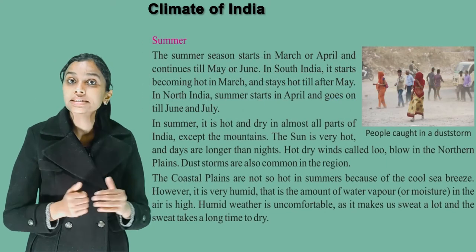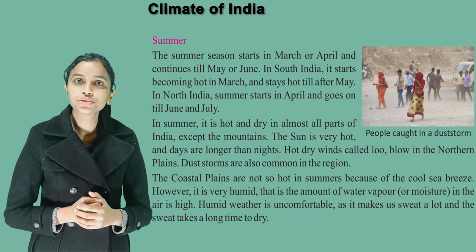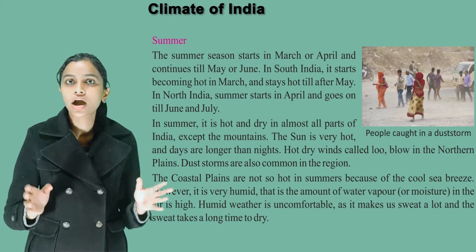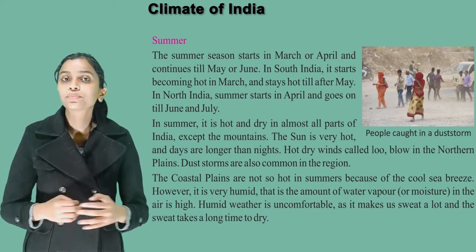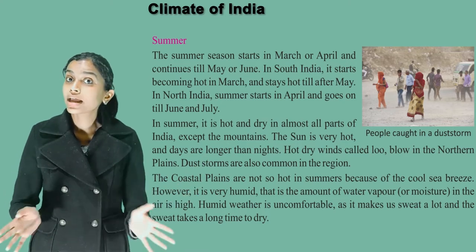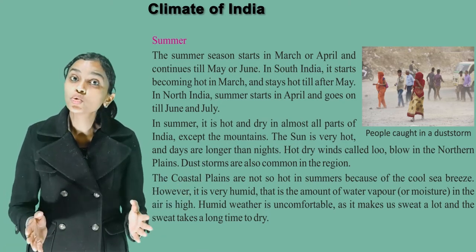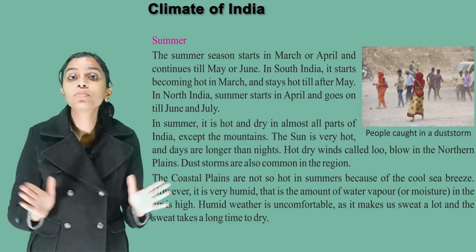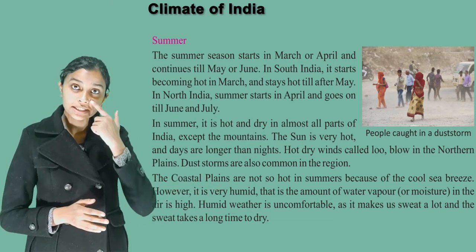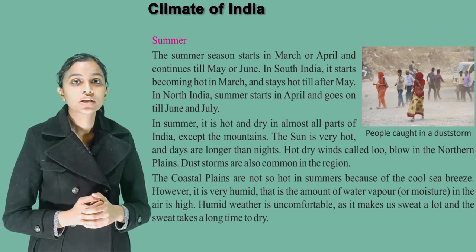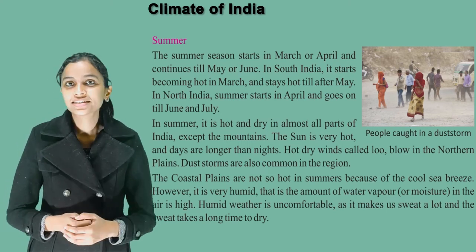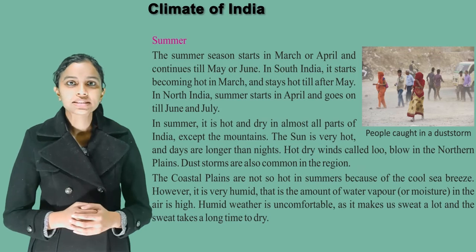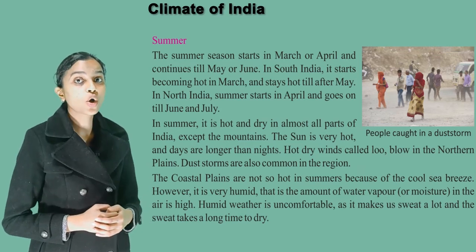Summer. The summer season starts in March or April and continues till May or June in South India. It starts becoming hot in March and stays hot till after May. In North India, summer starts in April and goes on till June and July. In summer, it is hot and dry in almost all parts of India except the mountains. The sun is very hot and days are longer than nights. Hot dry winds called loo blow in the northern plains. Dust storms are also common in the region.